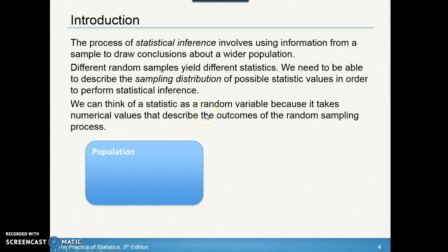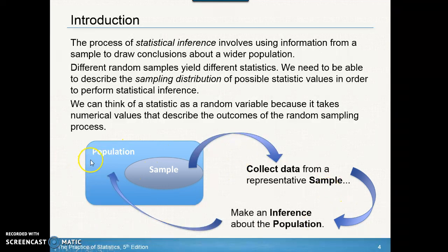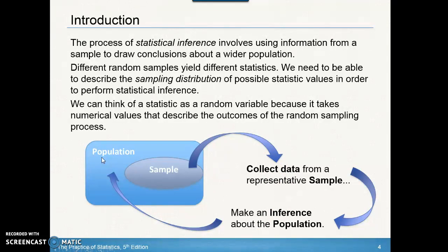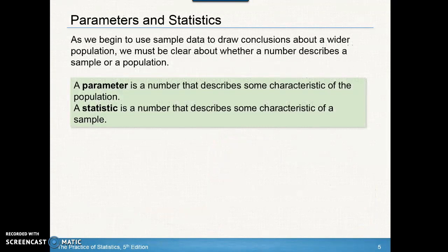We can think of a statistic as a random variable because it takes on numerical values that describe the outcome of the random sampling process. Basically, we start out with a population, we gather a sample, and then we make an inference about the population. But instead of gathering just one sample of 50 students, we take thousands of samples of 50 students and look at all of them before making an inference about the population. That's what a sampling distribution is.